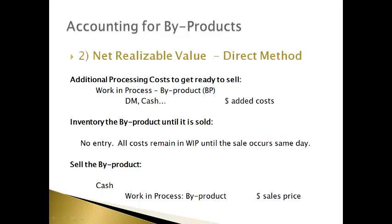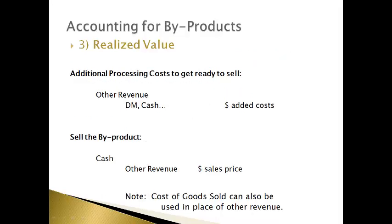The net realizable value direct method is very similar to the indirect method. Further processing costs are recorded to work-in-process, but no entry is made to move costs from work-in-process to finished goods because the goods are expected to be sold the same day, and no finished goods inventory account is necessary. The realized value method is used when byproducts are not typically sold and the company disposes of the excess. The other revenue account is used because this is not part of normal day-to-day operations, and no inventory account is used. Some companies use cost of goods sold instead of other revenue if they have byproducts they sometimes sell.